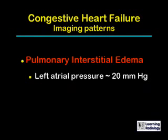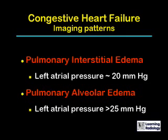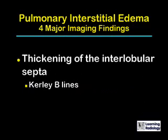There are two major imaging patterns for congestive heart failure. There is pulmonary interstitial edema, which generally occurs when the left atrial pressure is around 20 millimeters of mercury. And then as the fluid pours out of the interstitium into the alveoli of the lung, usually at a left atrial pressure of greater than 25 millimeters of mercury, there is pulmonary alveolar edema, which is frequently just referred to as pulmonary edema. We're going to talk about pulmonary interstitial edema.